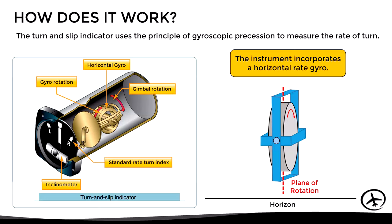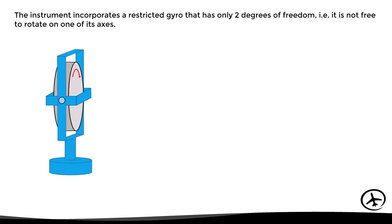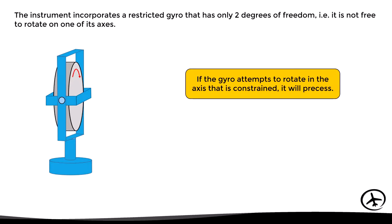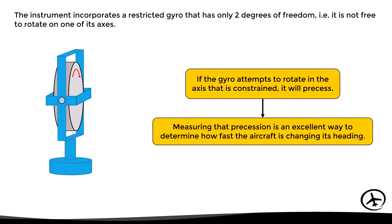The plane of rotation of the gyro is perpendicular to the horizon, as with other instruments such as the heading indicator. However, the difference is that this is not a free gyro — it has only two degrees of freedom, meaning it is not free to rotate on one of its axes. If the gyro attempts to rotate in the restricted axis, it will precess.